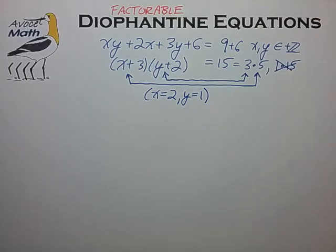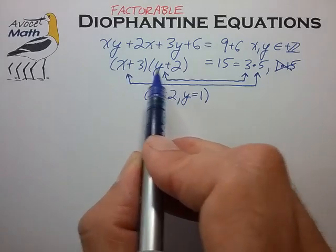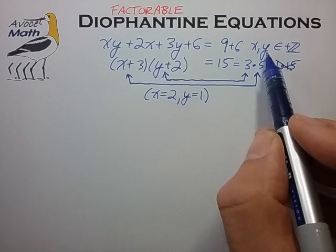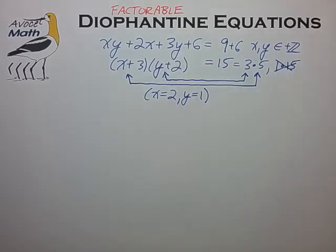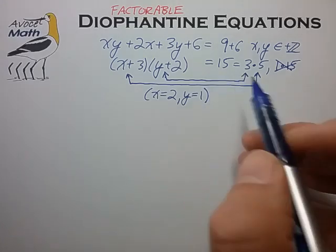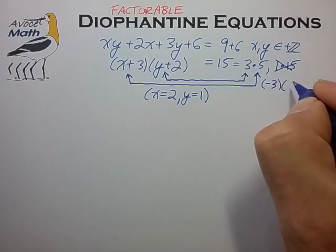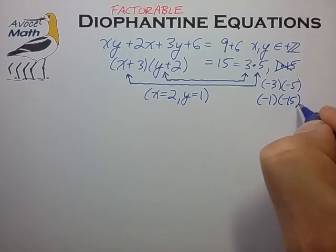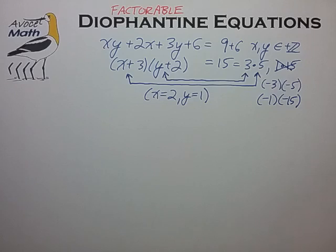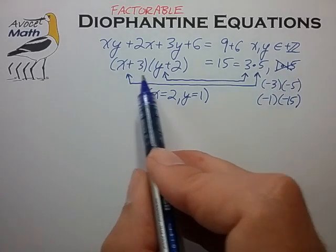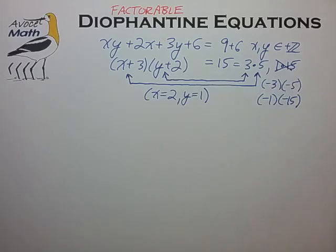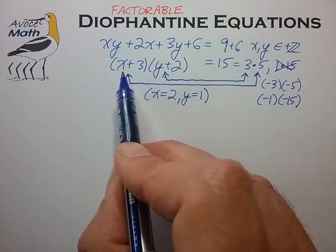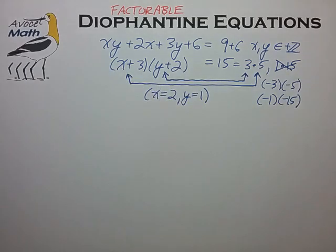One wrinkle that can be thrown into this equation type is a negative sign somewhere on the left side of the equation, or possibly solving the equation for x and y in all integers, positive and negative. In either of those two cases we have to consider factor pairs such as minus 3 times minus 5 and also minus 1 times minus 15. In that case we find that we'll have four possible factor pairs to consider, and for this example all four factor pairs lead to solutions in x and y.